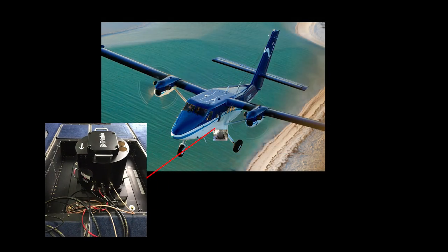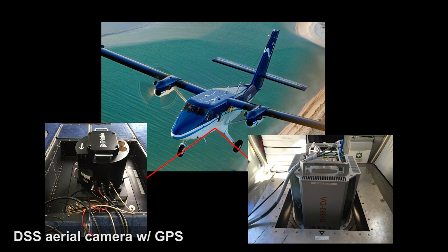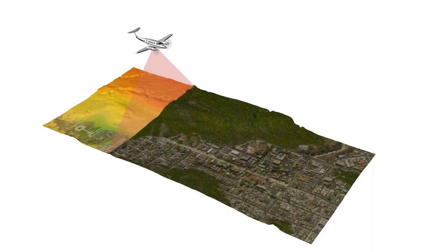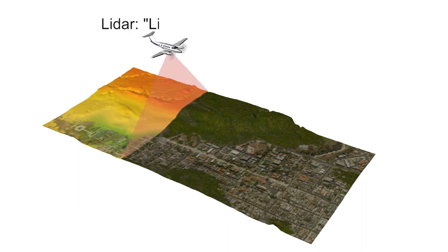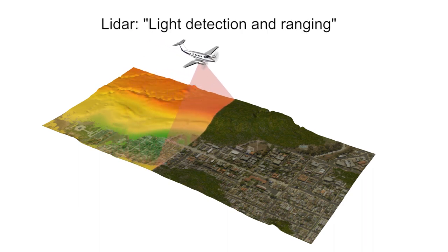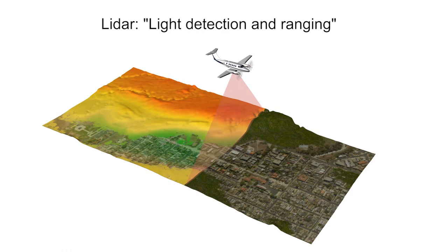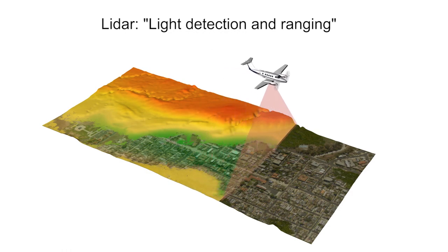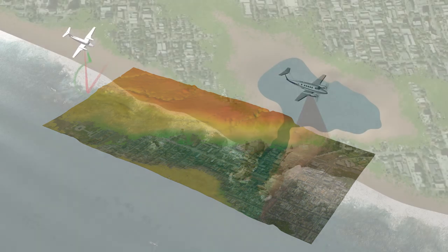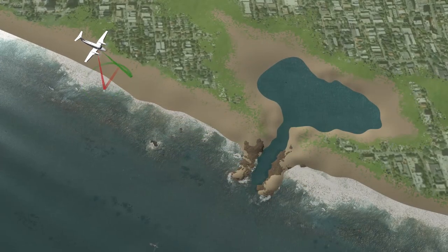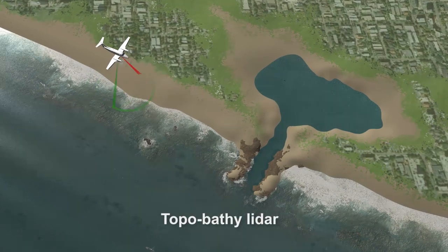Remotely sensed data from aircraft is collected to map the shoreline. The use of aircraft-based sensors, such as a digital camera and topobathy lidar system, allows large areas to be surveyed in a short amount of time. LIDAR, which stands for light detection and ranging, is a remote sensing method that uses a laser to measure distances to a surface. NGS uses a unique type of sensor called topobathy lidar.